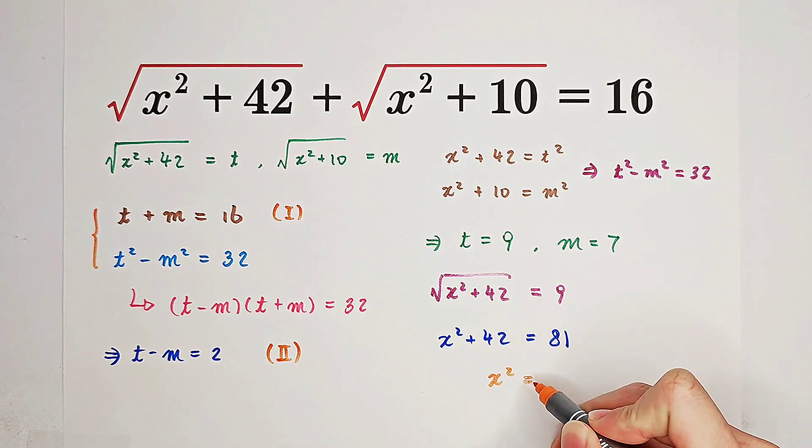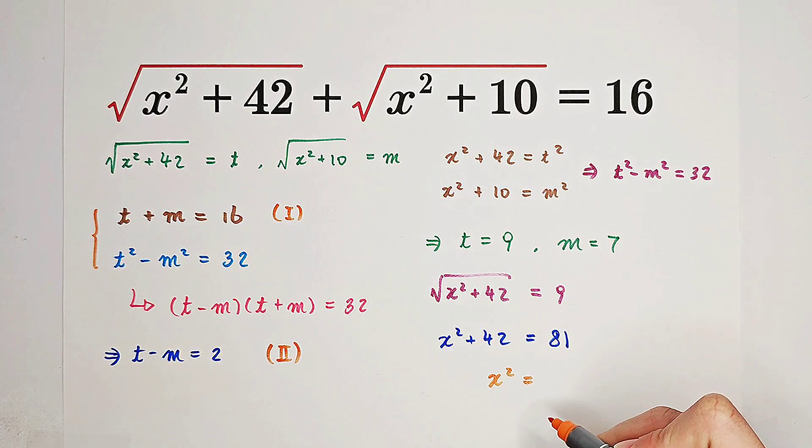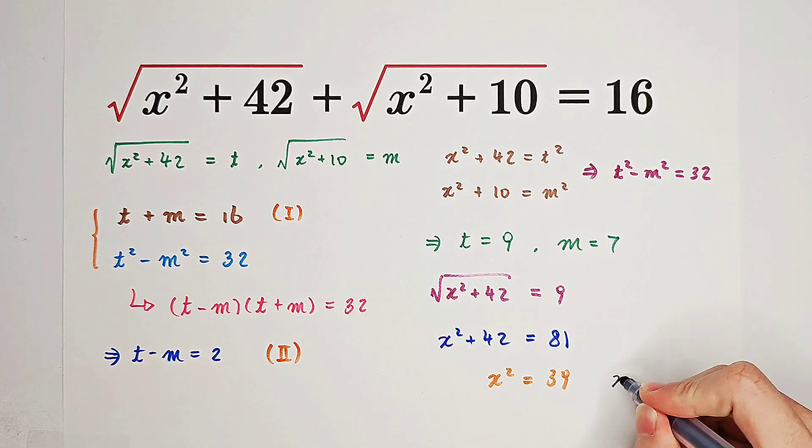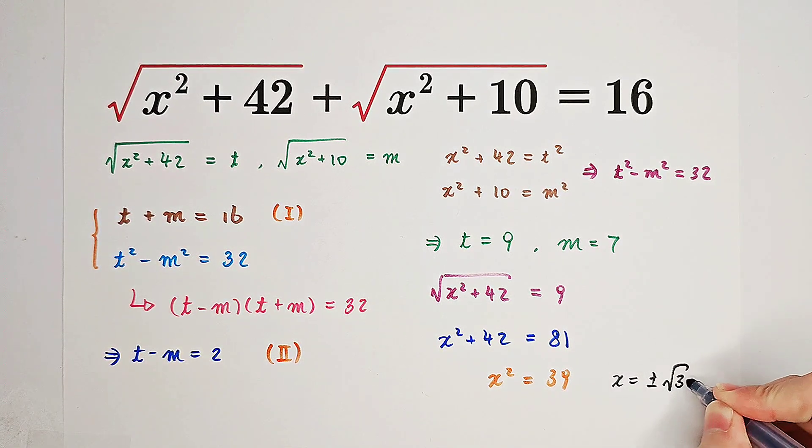x squared is 81 minus 42. What is it? It is 39. x squared equals 39. x is positive or negative square root of 39.